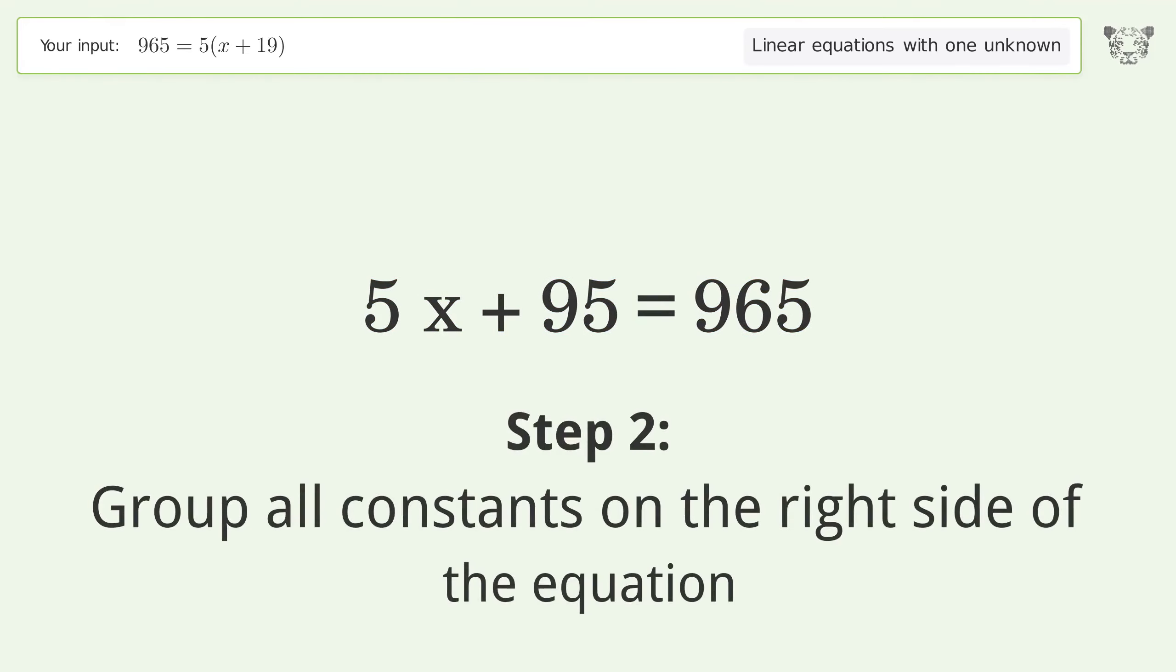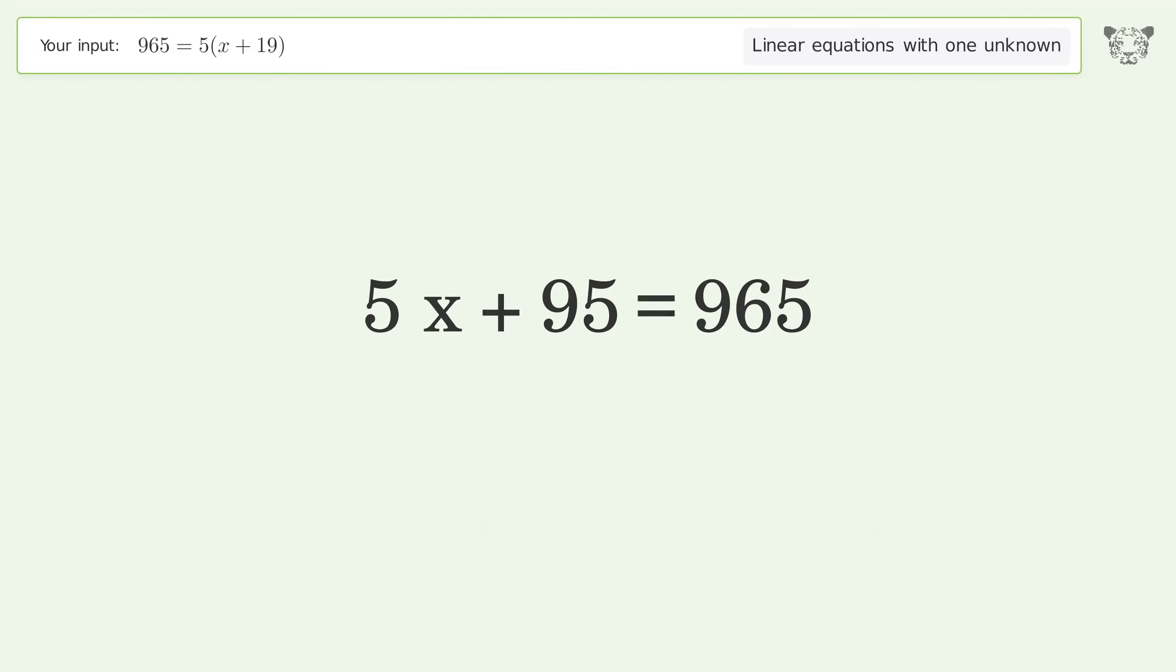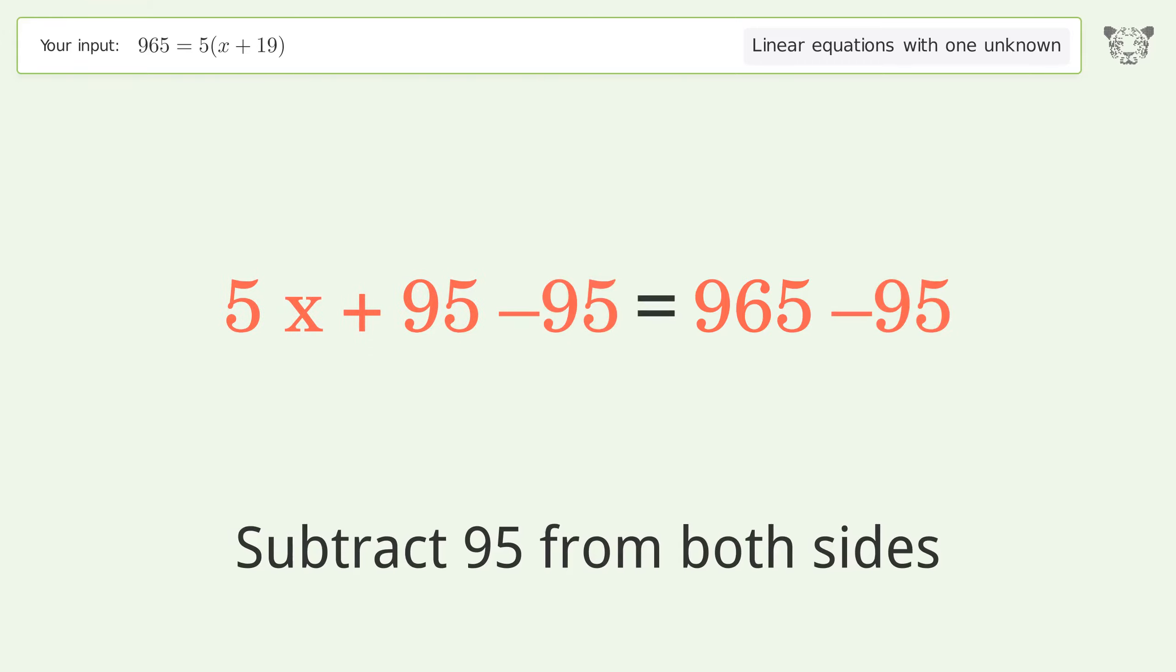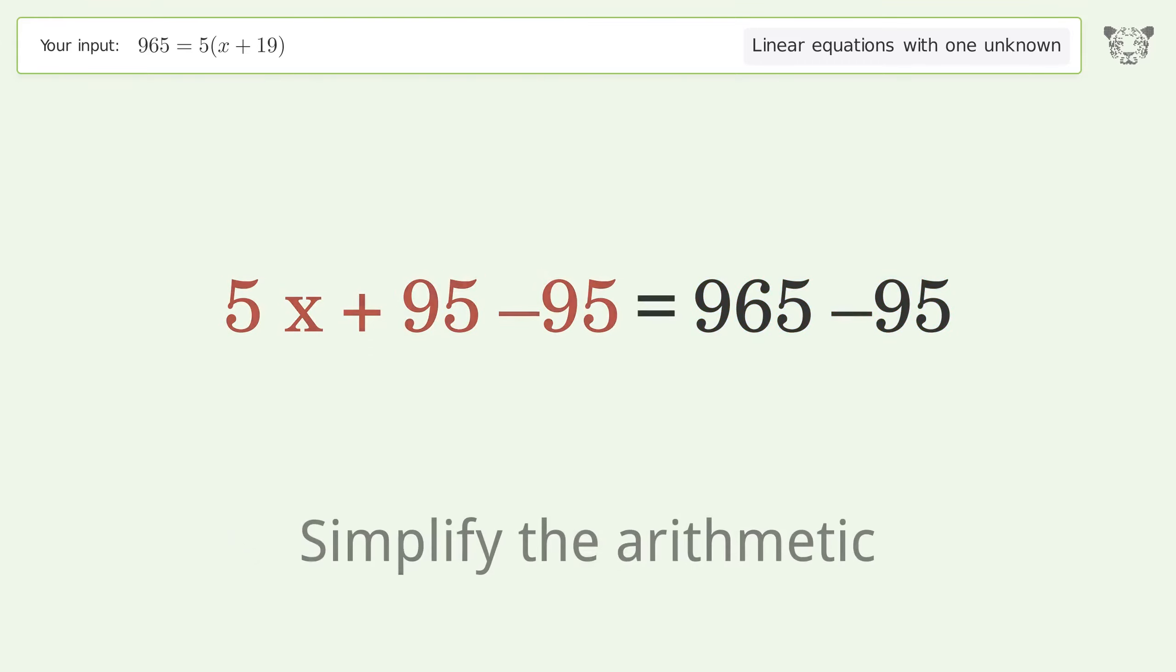Group all constants on the right side of the equation. Subtract 95 from both sides. Simplify the arithmetic.